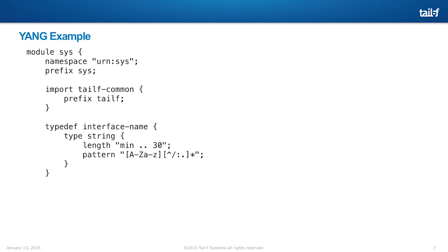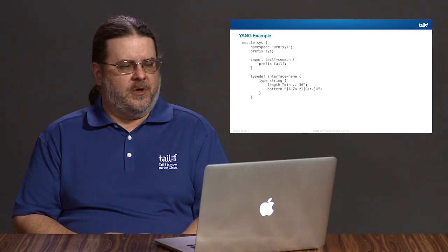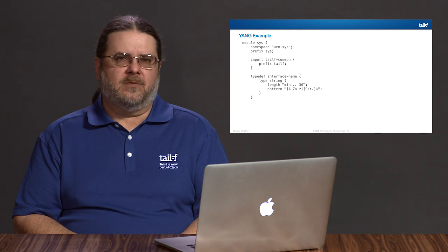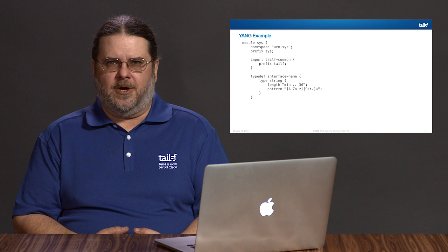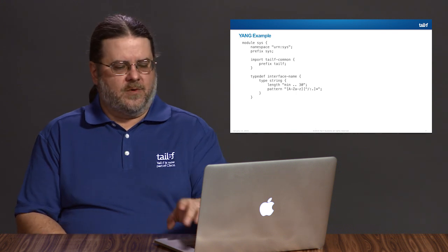If you're familiar with XML schema and simple types, a Yang typedef is pretty much the same thing — you take an existing base type, apply constraints to it, and then that type can be used later in your model. ConfD automatically enforces these typedef constraints, such as length requirements or pattern match requirements. All syntactic validation is described in the Yang data model, and ConfD enforces that.